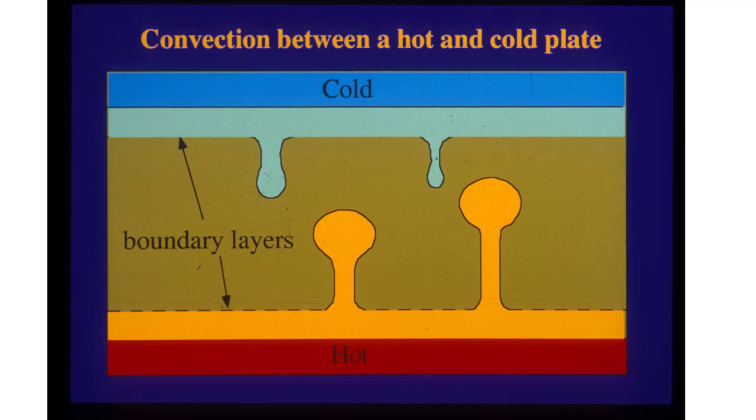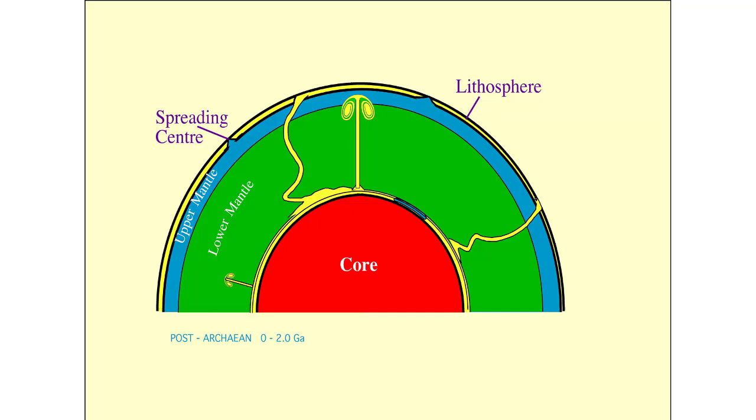And more or less the same thing happens in the mantle with one fundamental difference that I'll come to. The surface of the Earth is cold. It's about 20 degrees on average.